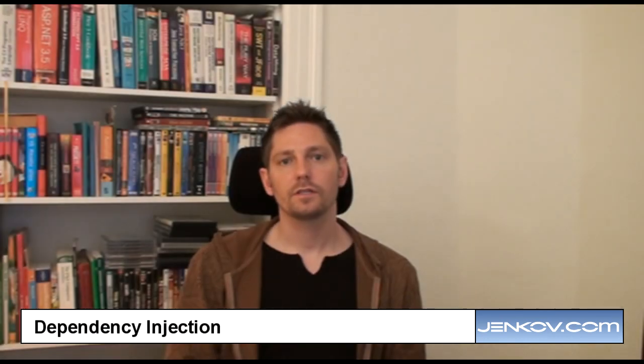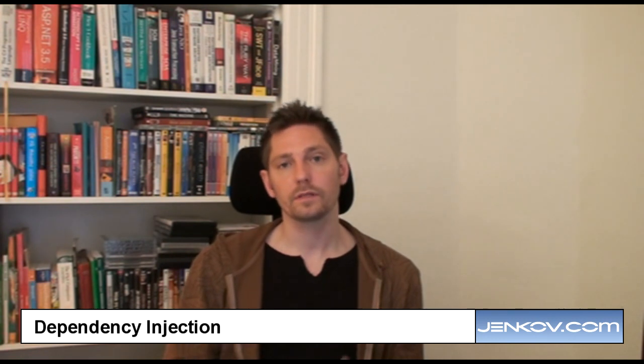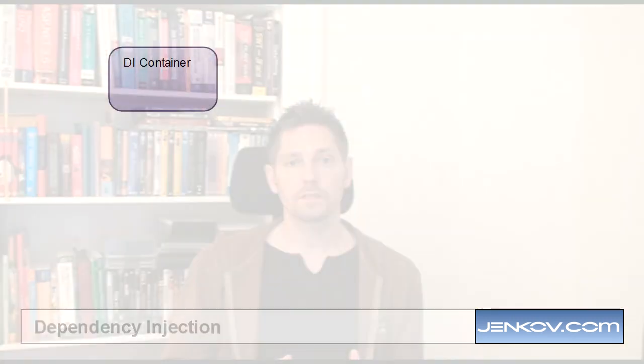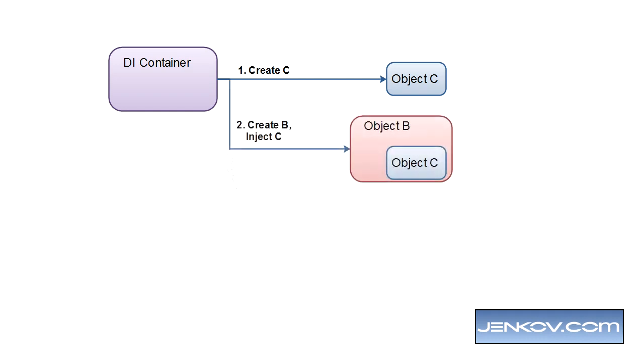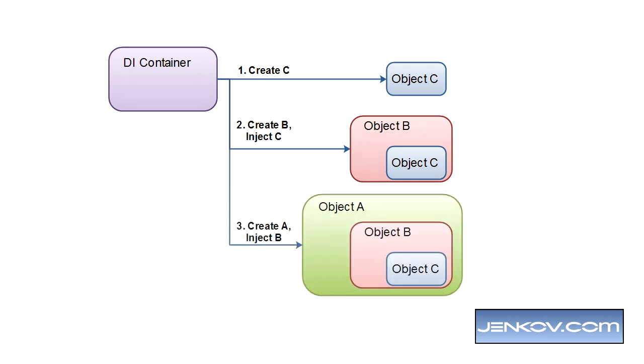When the dependency injection container is going to create an object, it will first resolve all its dependencies. For example, if the container has to create object A, and object A depends on object B, and object B depends on object C, then first the dependency injection container will start out by creating object C. Then it will create object B and inject object C into it. And finally, it will create object A and inject object B into it.